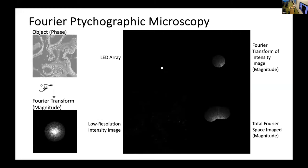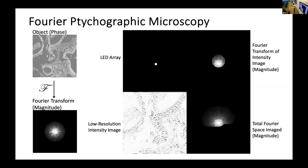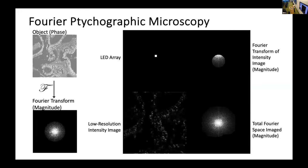So this little animation shows how that works. You sweep through the LEDs in the array. And for each LED, you modulate different spatial frequencies into the passband of the microscope. So the passband of the microscope is defined by the numerical aperture of the objective. With Fourier ptychographic microscopy, you can image spatial frequencies that go beyond what is defined by the numerical aperture of the microscope.